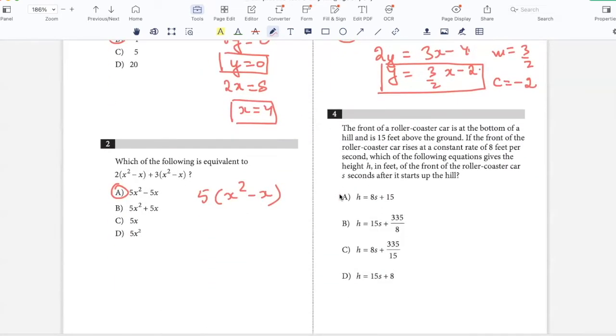The front of a roller coaster car is at the bottom of a hill and is 15 feet above the ground. Let's say this is my hill. This is the front of the roller coaster car and it is 15 feet above the ground. If the front of the roller coaster car rises at a constant rate of 8 feet per second.